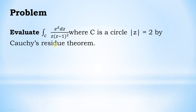For example, evaluate the integral over C of e^z divided by z(z−1)² dz, where C is the circle |z| = 2, by Cauchy's residue theorem.